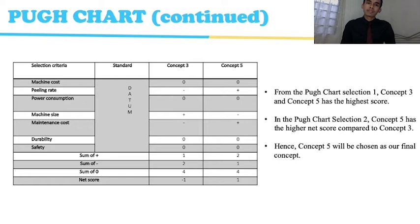Pugh chart continued. In the Pugh chart section two, concept five has a higher net score compared to concept three. Hence, concept five will be chosen as our final concept.